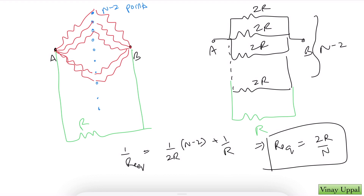I hope you have understood how I solved this question just by symmetry. Whenever a question looks a little complicated — like you have many resistances and you may think it's a complicated circuit — almost always there will be some sort of symmetry that you have to look out for. That's it for today. See you at the top. Good night.